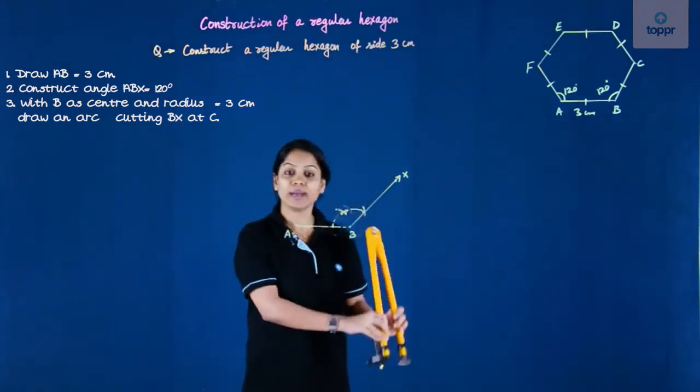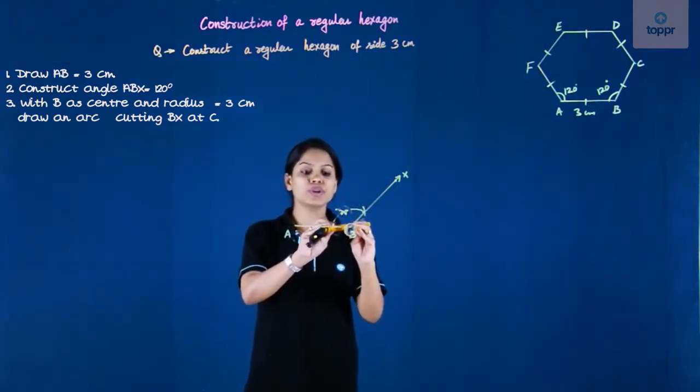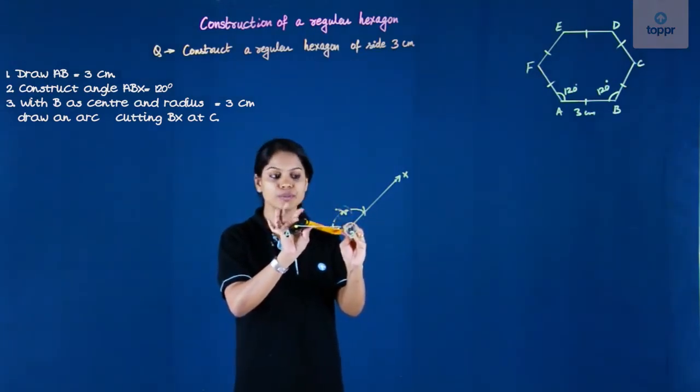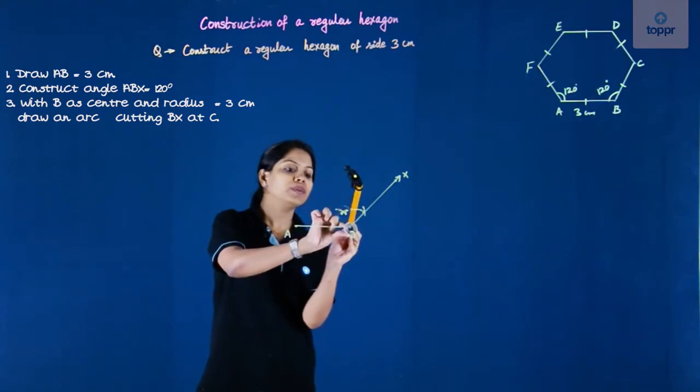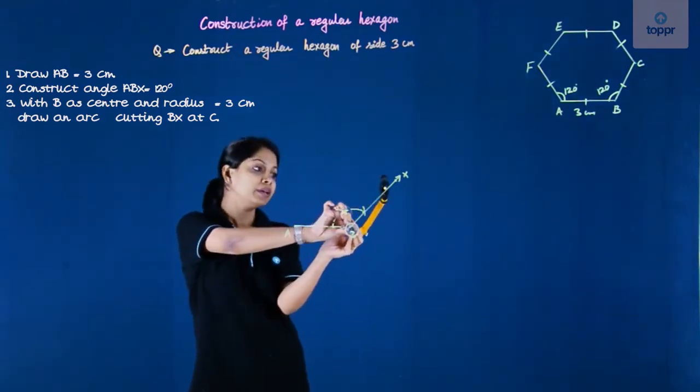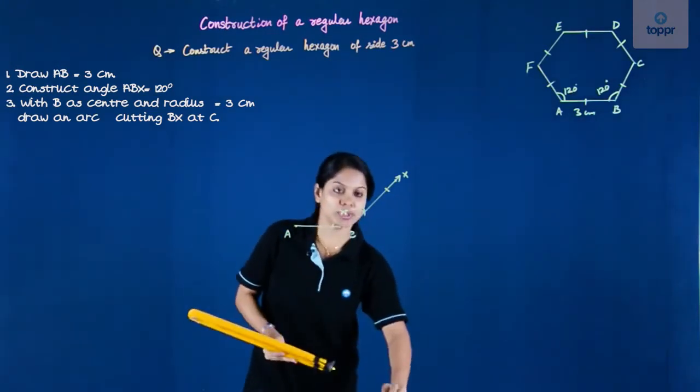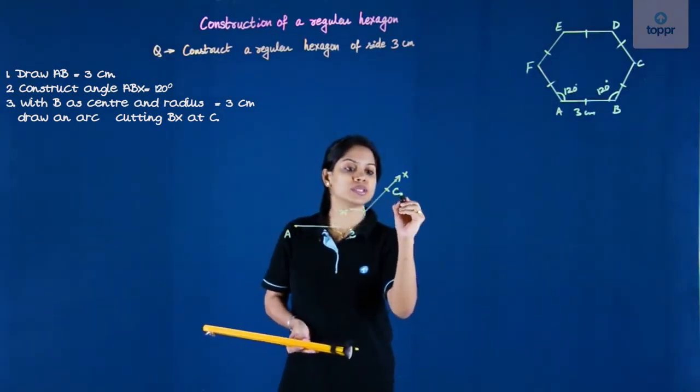So I can go back to the ruler, measure 3, or because I have already done it once, I can do it from AB because AB is already 3 centimeters. So I will keep the needle at B and cut an arc of 3 centimeters measure, so that this point here is C.